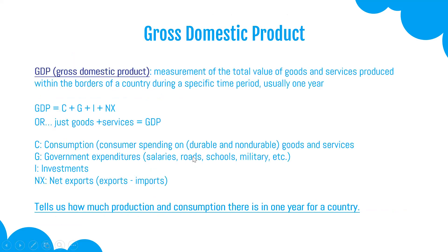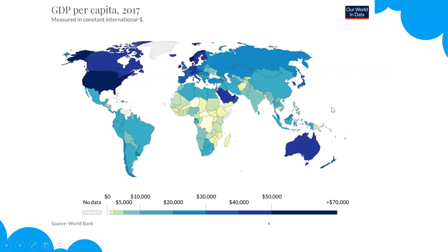The first big economic measurement is Gross Domestic Product. It's the measurement of the total value of goods and services produced within the borders of a country during a specific time period — usually one year. A quick formula for GDP is goods and services produced within a country's borders. This tells us how much production and consumption there is in one year for a country and gives us a hint as to how economically stable a country is. Here's a map showing GDP per capita — per person — amongst various nations of the world.